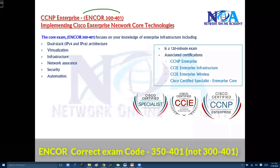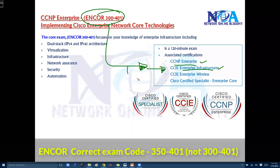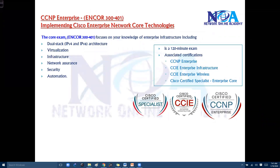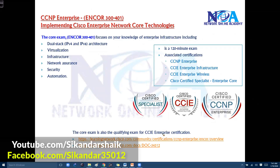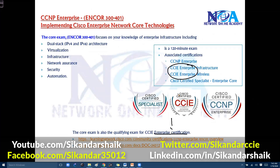This CCNP Enterprise core exam is associated with multiple certifications. If you want your CCNP Enterprise certification, you need to pass this exam. It's also a prerequisite for CCIE Enterprise Infrastructure and CCIE Enterprise Wireless. If you pass just this ENCORE exam, you also get a Cisco Certified Specialist designation. The core exam is a qualifying exam for both CCIE Enterprise Infrastructure and CCIE Enterprise Wireless options.